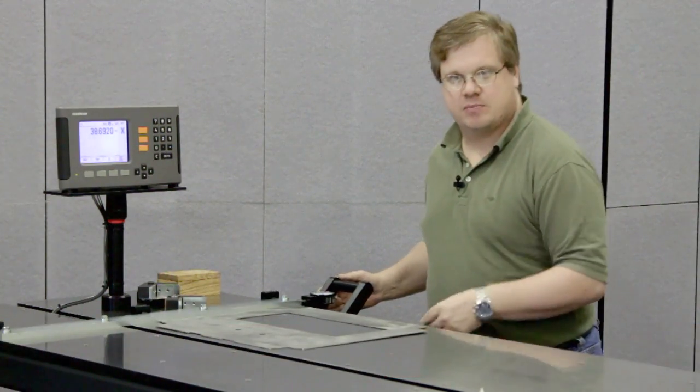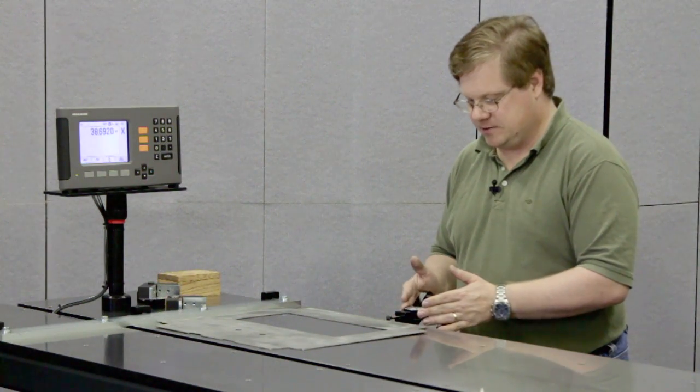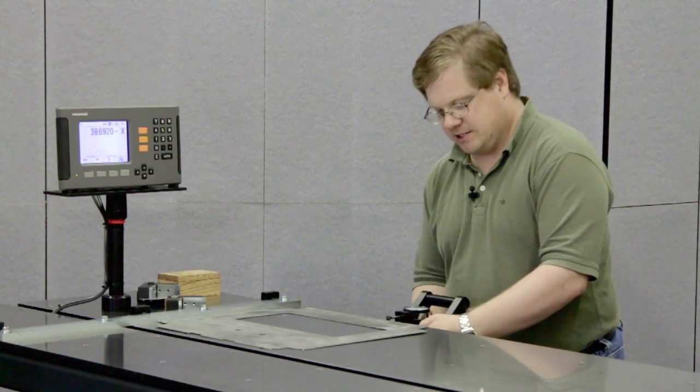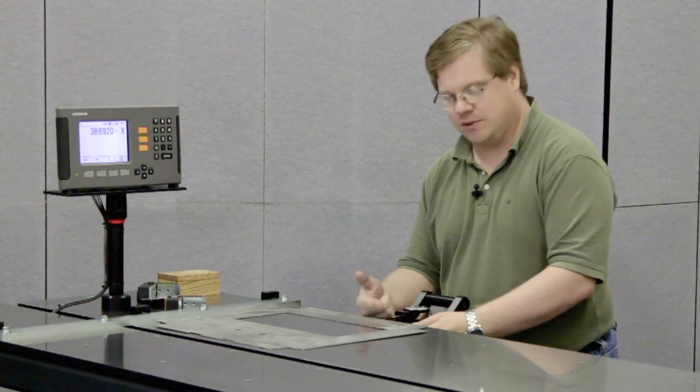This is our squareness gauge. It runs on the same bearing as the probe. There's a dial indicator that comes out off the edge. You want to adjust that so that when your sheet metal piece comes over the edge, it makes contact with the indicator.